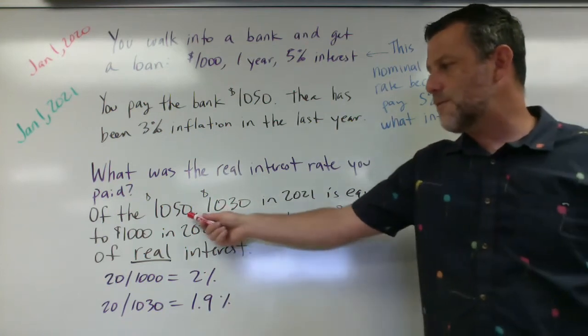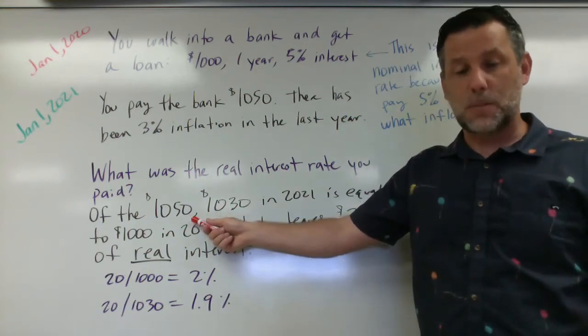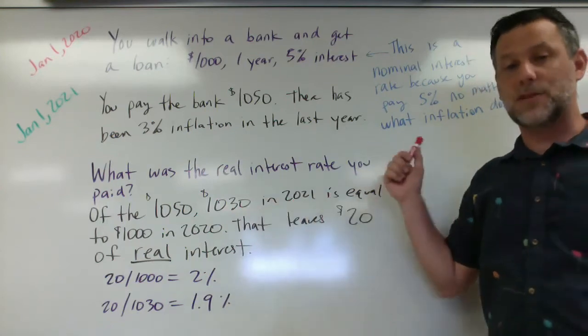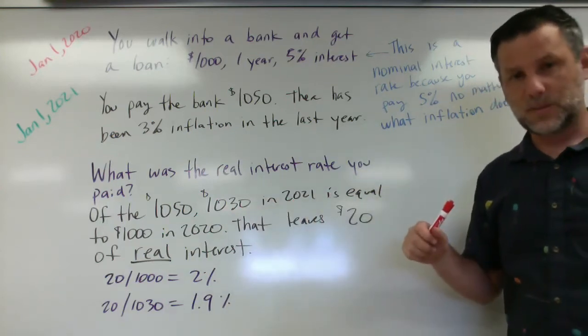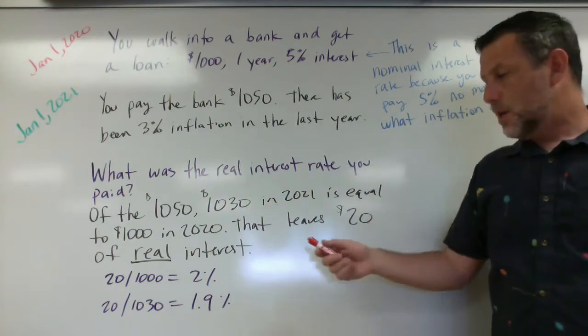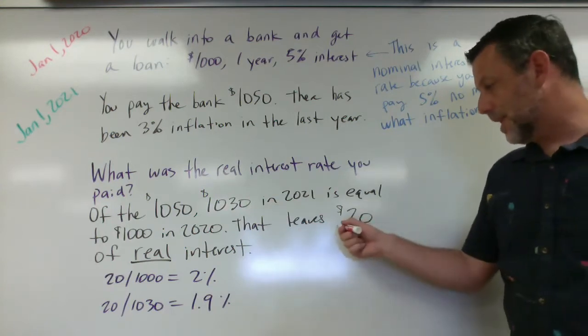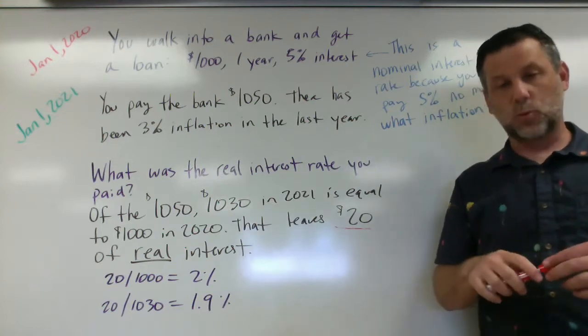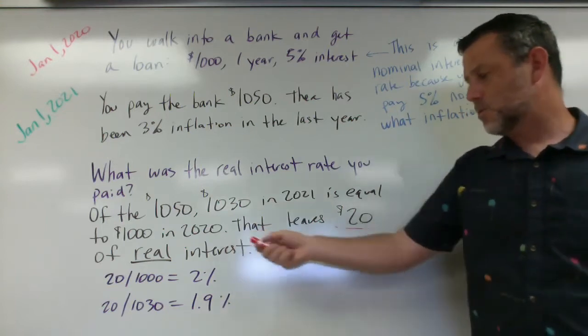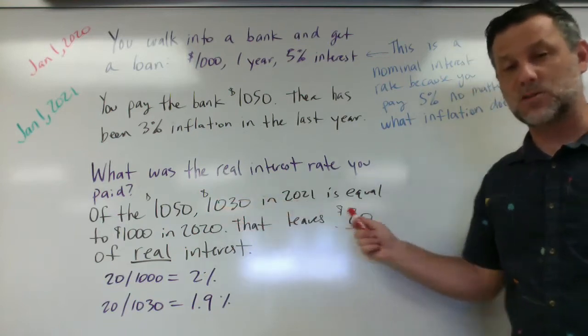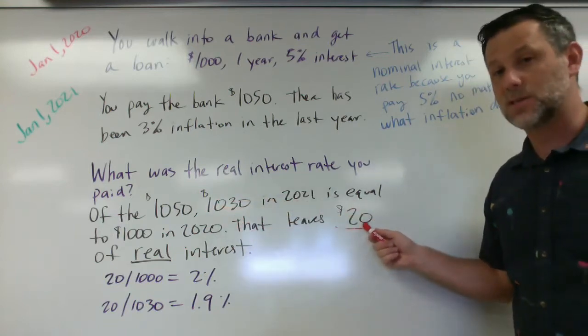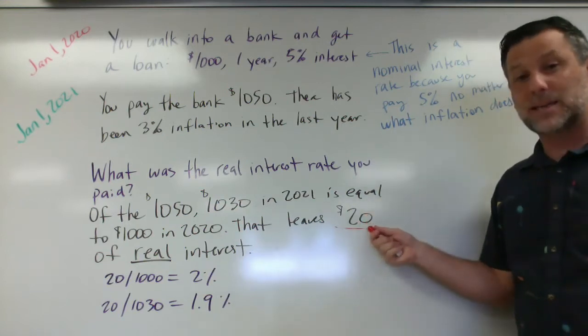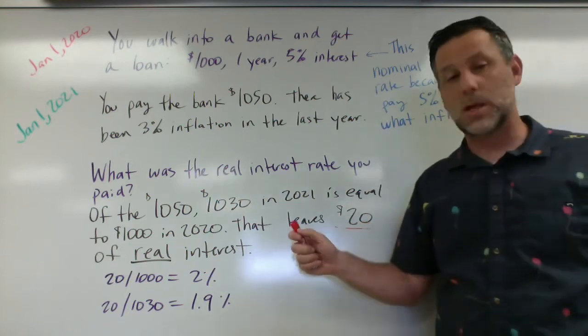So what this means is of the $1,050 you're paying, $1,030 of them is the equivalent of the original $1,000, which means we have $20 left over. That's actual interest that you're paying. That's real interest. Because once we adjust the original amount for inflation, we see there's only $20 left of interest, not $50.